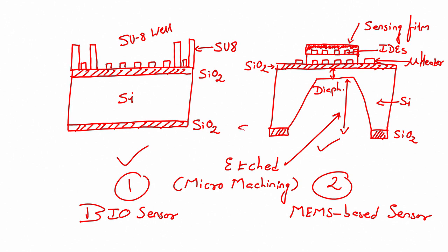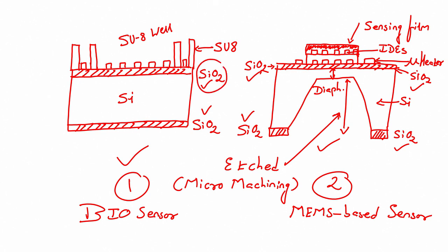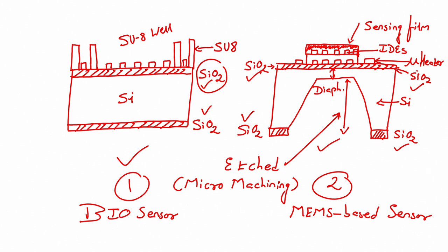In both cases we have seen silicon dioxide which is grown on the silicon substrate. Now we have to see how we can grow this silicon dioxide. In this particular lecture we are focusing on that, and we are moving towards understanding integrated circuits — how we can fabricate a MOSFET — and then we will go to the op amp.